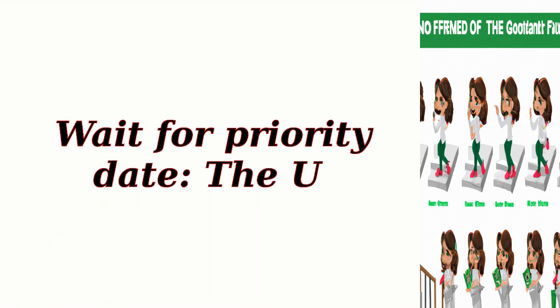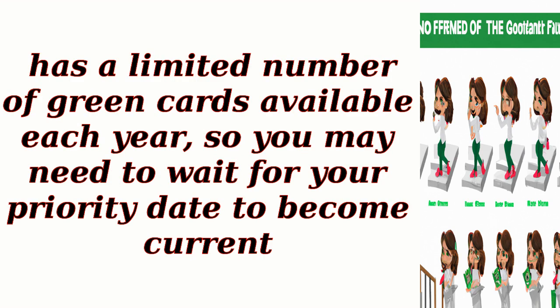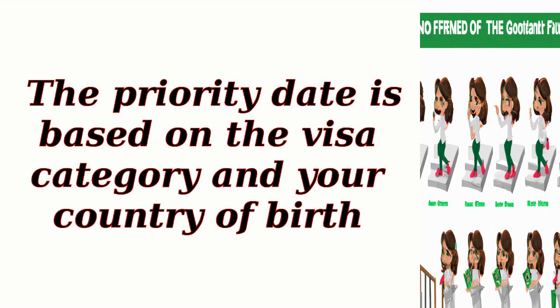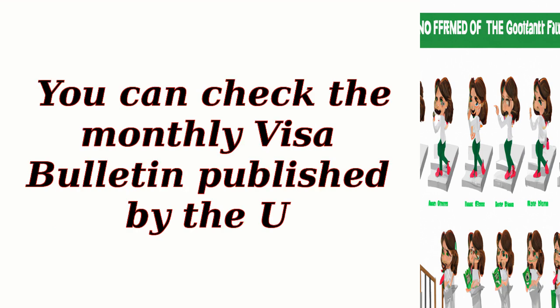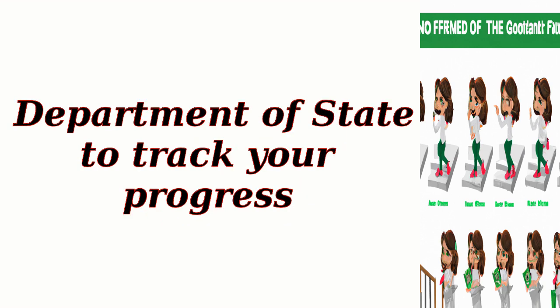Step 5: Wait for your priority date. The U.S. has a limited number of green cards available each year, so you may need to wait for your priority date to become current. The priority date is based on the visa category and your country of birth. You can check the monthly visa bulletin published by the U.S. Department of State to track your progress.